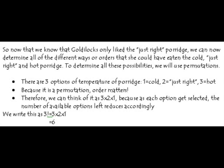Now that we know that Goldilocks only likes the just-right porridge, we can determine all of the different ways or orders that she could have eaten the cold, the just right, and the hot porridge. To determine all of these possibilities, we will use permutations. So, there are three options of temperature of porridge: cold, just right, and hot.